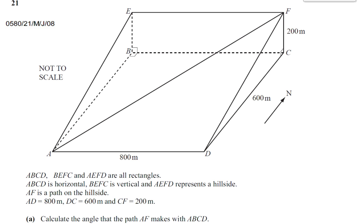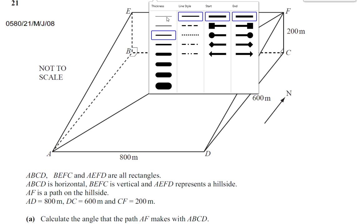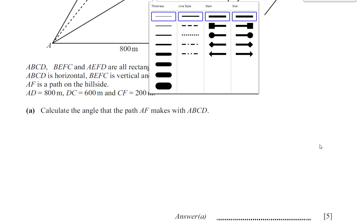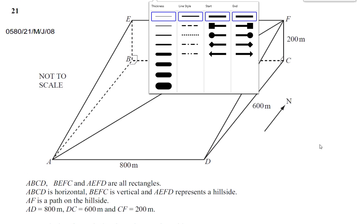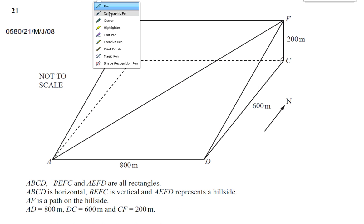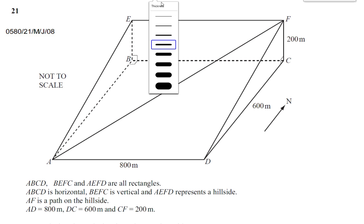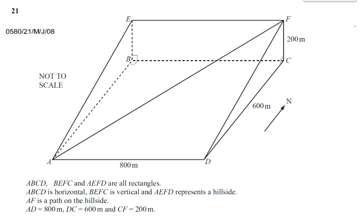Here we are at question number 21 from May/June 2008 Paper 2 - the very last question on the paper. This is a question to do with three-dimensional trigonometry and it's a five-mark question with no scaffolding, so we basically have to find our own way to answer it. There are a few steps involved which they don't actually give any clues for.